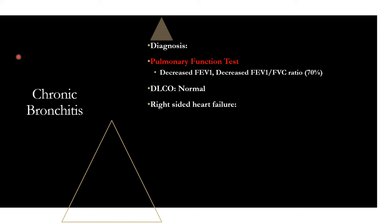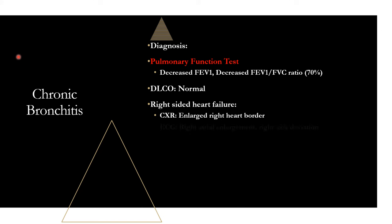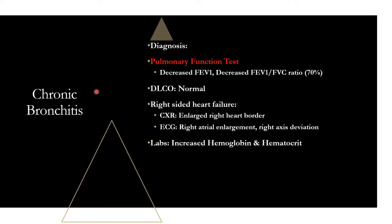All the other diagnostic findings in chronic bronchitis relate to right-sided heart failure and chronic hypoxia. On chest X-ray, you'll see an enlarged right heart border. ECG will show right atrial enlargement and right axis deviation — all right-sided heart failure findings. Your labs will show an increased H&H because of chronic hypoxia. The main thing to know is your PFTs with a normal DLCO; these other findings are just suggestive of the heart failure and chronic hypoxia.